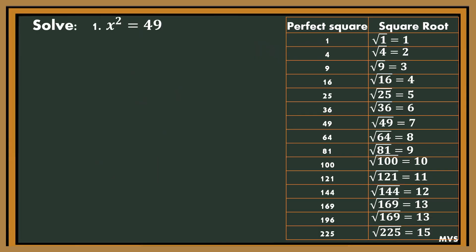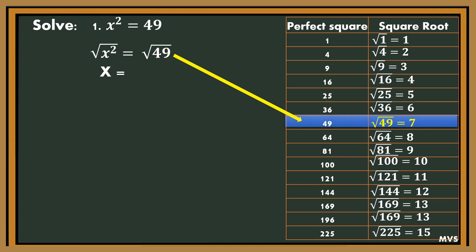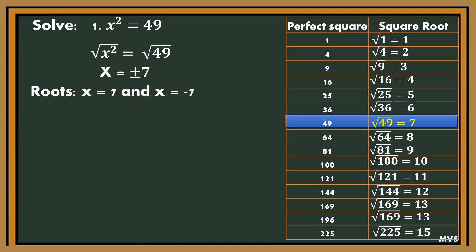Example: x squared equals 49. Get the square root of both sides. We will have the square root of x squared equals the square root of 49. The square root of x squared is x. Since 49 is a perfect square, using the table at the right side, the square root of 49 is 7. Therefore, x is equal to plus or minus 7, and the roots or solutions are positive 7 and negative 7.